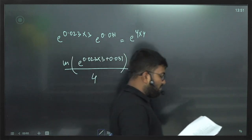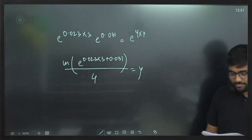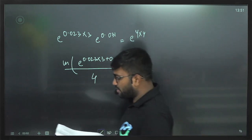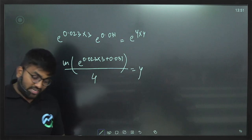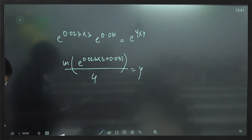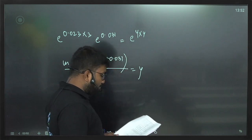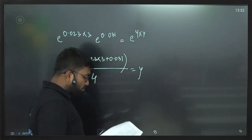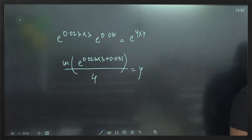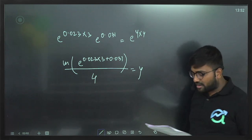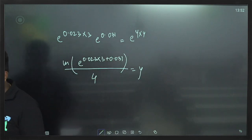At time 0, an investor purchased 500 nominal of zero coupon bonds maturing at time 3, and 1000 nominal of zero coupon bonds maturing at time 4. At time 2, interest rate expectations have changed. Calculate the profit or loss the investor would make if they sold all their bonds at time 2. Then there is a theory question: Explain the meaning of an inverted yield curve, explain why it is unusual, and suggest possible reasons why a yield curve may be inverted.